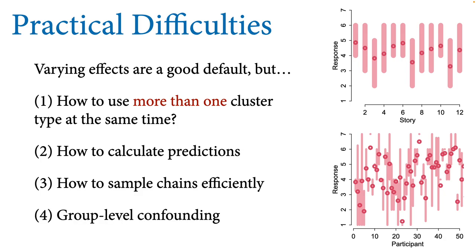Group-level confounding is a real threat in models and it's often ignored in the varying effects literature. It's something to really think about. In the bonus round from last week, I showed you one effective way to deal with this that's essentially equivalent to the fixed effects approach.